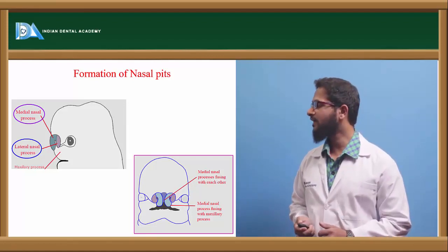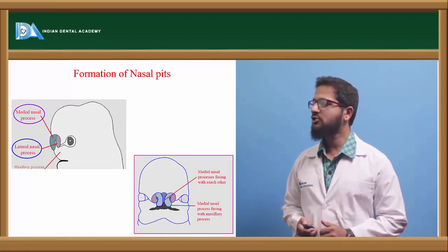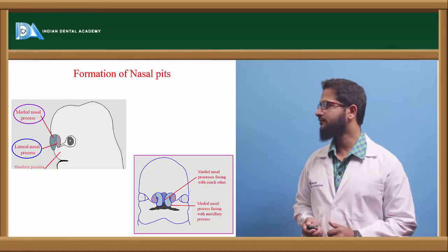Formation of the nasal pit divides the frontonasal process into the median nasal process and the lateral nasal process. As the two maxillary processes from either side start growing towards each other, the frontonasal process becomes narrow and ultimately the median nasal process fuses with the maxillary process. This junction results in and marks the nasolacrimal duct, as we can see in the diagram.